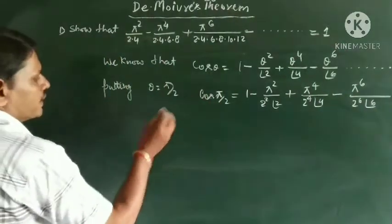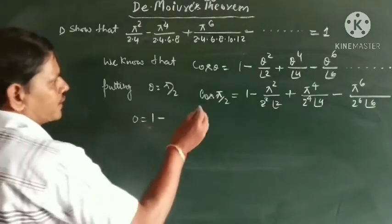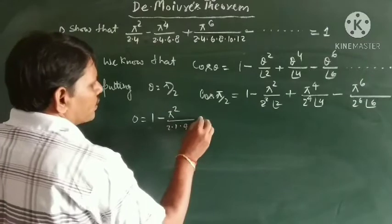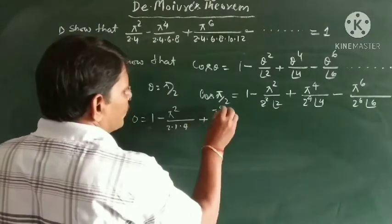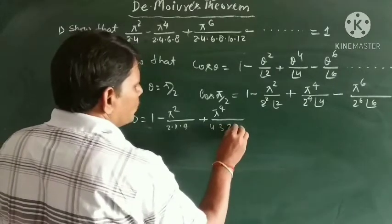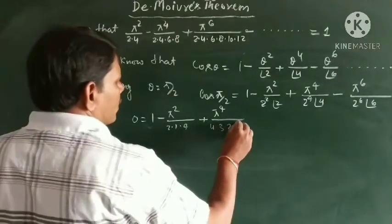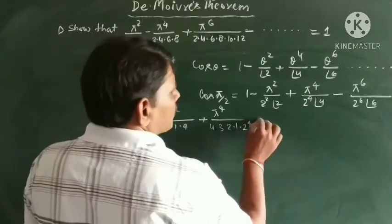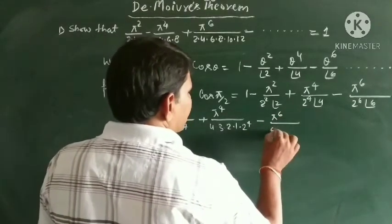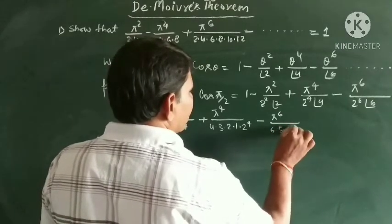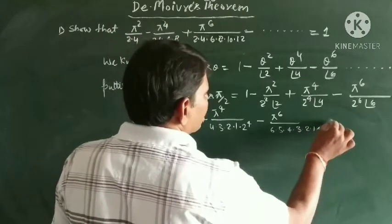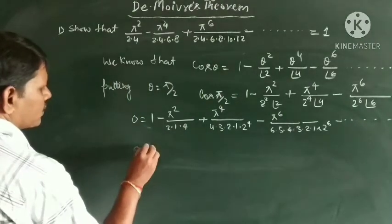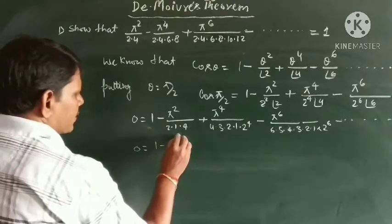Here cos pi by 2 is equal to 0. So: 0 equals 1 minus pi squared upon 2 into 1 into 1 into 4, plus pi to the power 4 upon 4 into 3 into 2 into 1 into 2 to the power 4, minus pi to the power 6 upon 6 into 5 into 4 into 3 into 2 into 1 into 2 to the power 6, and so on.